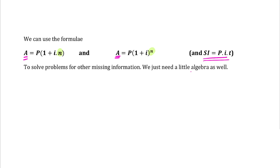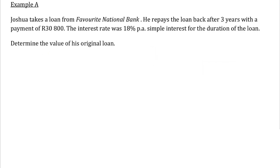We're going to need a little bit of algebra to use these formulas because we're going to have to work backwards to find other letters besides A. So we're going to read through this problem and try to identify the given information and what letters that represents. We've got a loan from First National Bank.